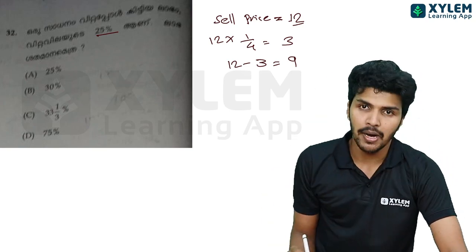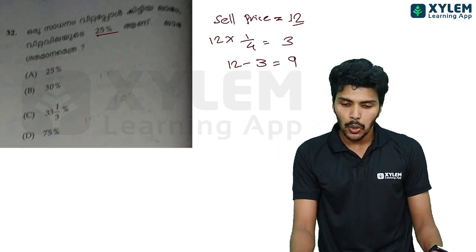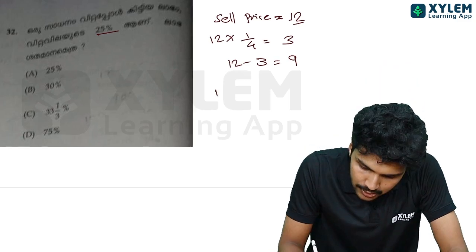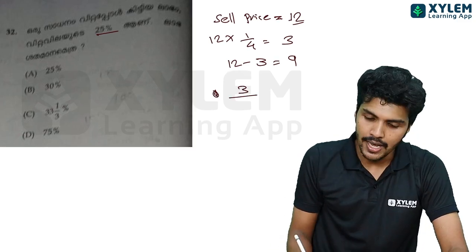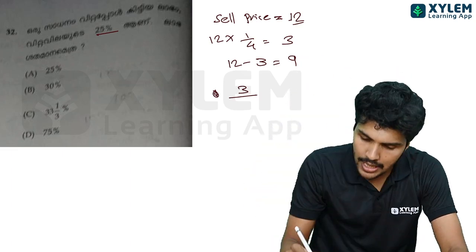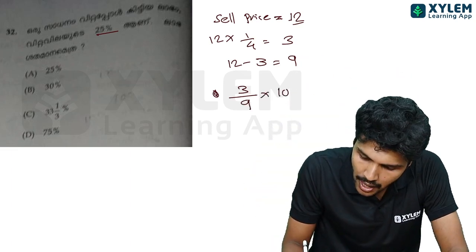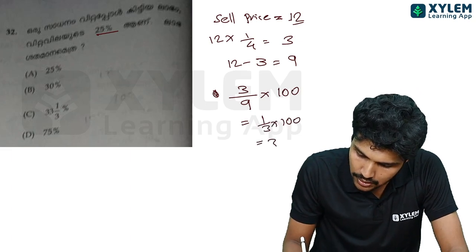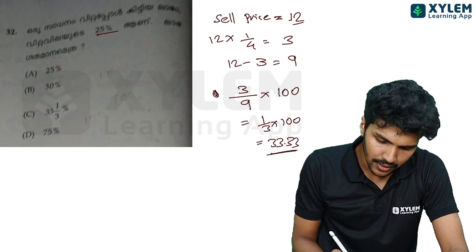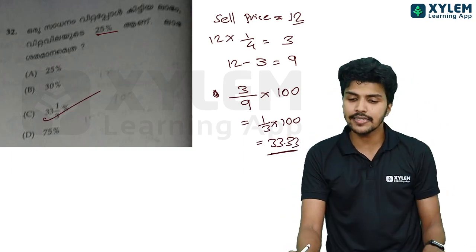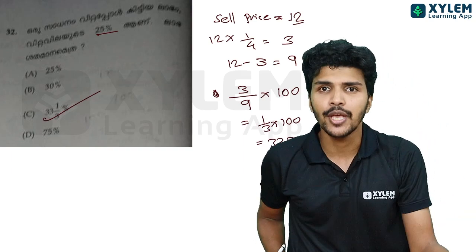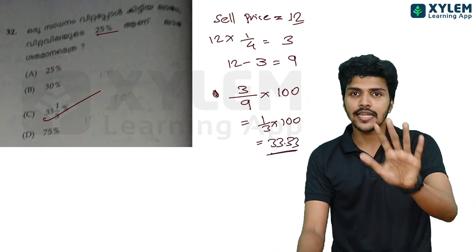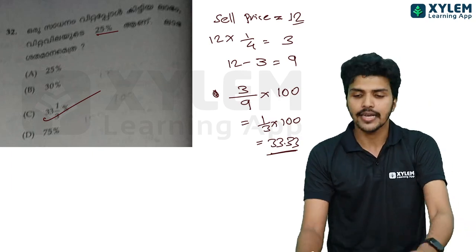This is the right answer. 1/3 × 100 — this is equal to 33.33, that is 1/3 percentage. This is the right answer. If you want to change the value of x and y, you can change the value of the option. If you want to change the value of the question, you can change the value of the answer.